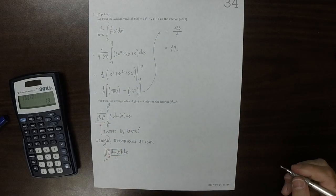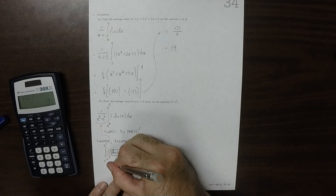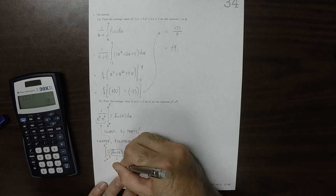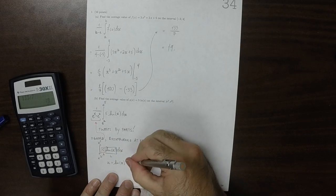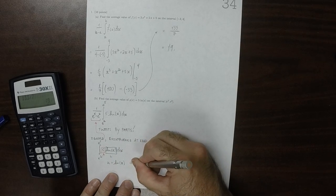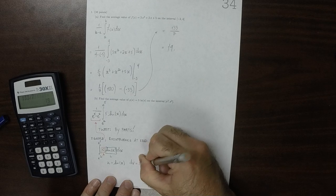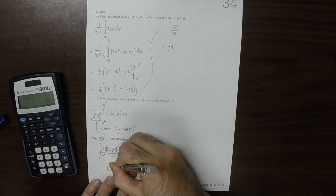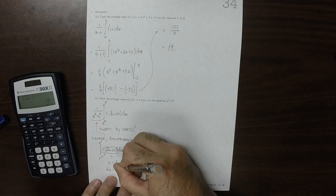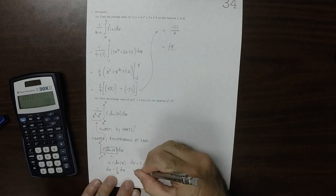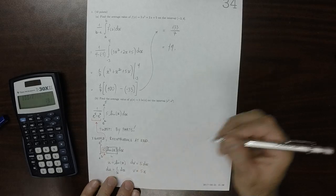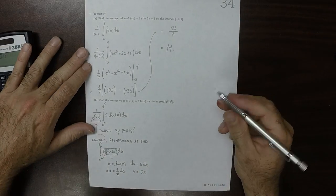So as a result of that, I will choose u is log of x. And then dv is everything else, 5 dx. So then du is 1 over x dx, and v is 5x.